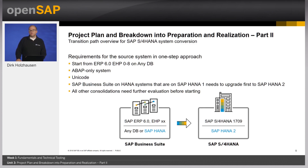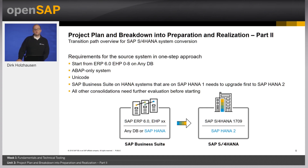On the previous slide we spoke about the target release for S4HANA. Here we look at the source release — so where are you starting from? In general, having a Business Suite system with a release of ERP 6.0 is already a good starting point. It does not matter what Enhancement Pack (EHP) you are on, and it does not really matter what database you are running on. The best way forward is the direct way — converting your current system directly into an S4HANA system. We call this a one-step approach. But there are some prerequisites for the source system.